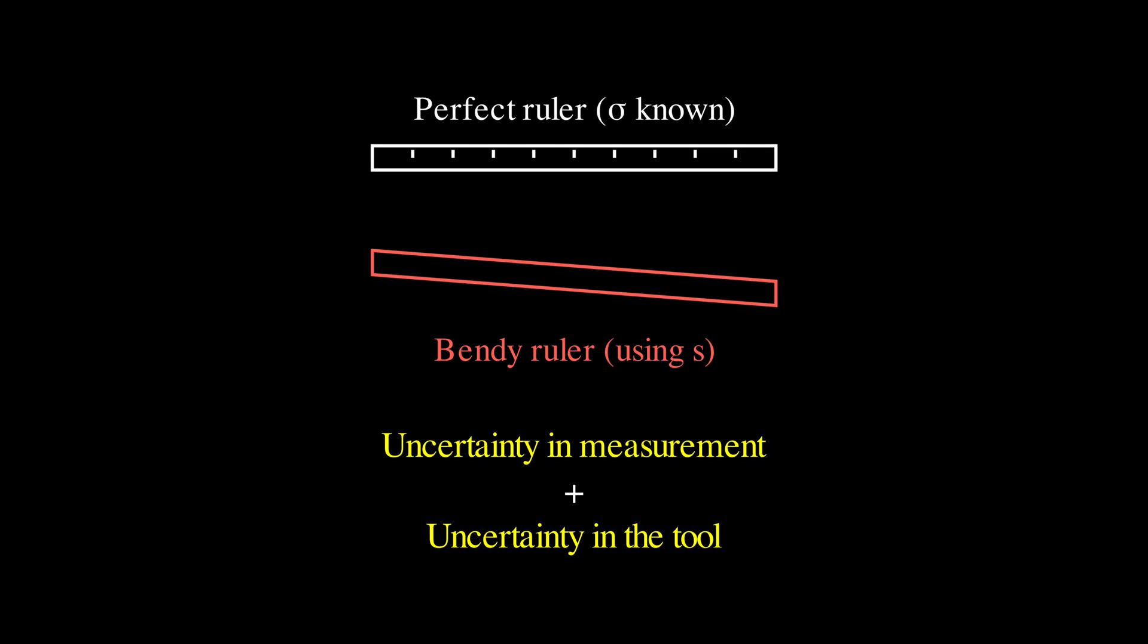This double uncertainty means that the normal distribution doesn't quite work anymore, especially when our sample size is small. Because, with a small sample, our estimate of the standard deviation could be quite far off from the true value.